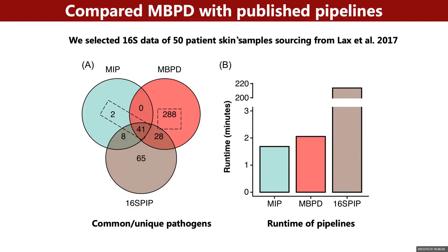Next, we used the same 16S data from patient skin samples to compare the performance of MBPD with similar pipelines, including 16S PIP and MIP. We found that MBPD could detect more pathogens, including most of the pathogens detected in the other two pipelines, and the runtime was also less, which was close to MIP.